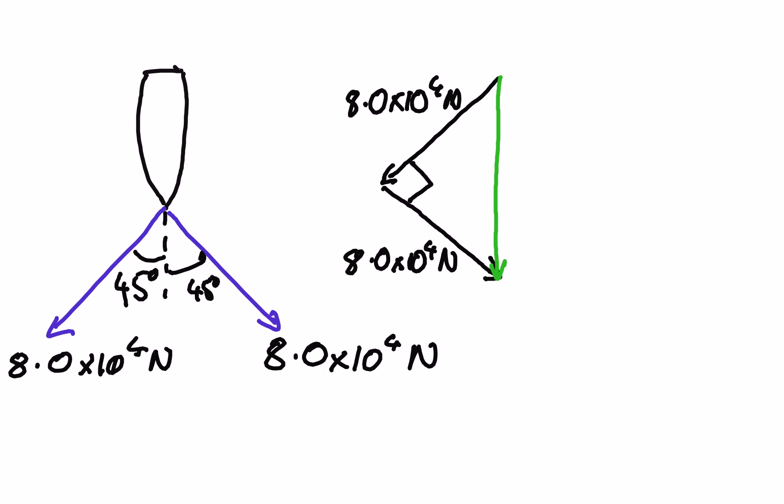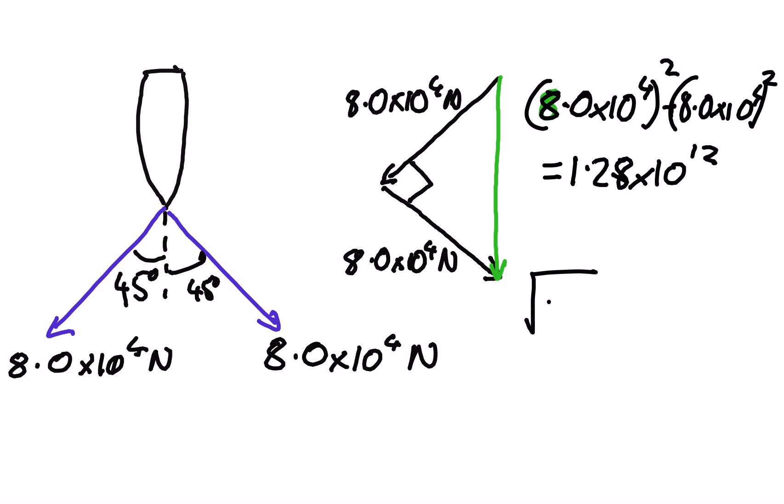We've got a right angle triangle. The resultant vector is the hypotenuse. So we've got 8.0 times 10 to the 4 squared plus 8.0 times 10 to the 4 squared, and that equals 1.28 times 10 to the 12. And of course this is the hypotenuse squared, so I need to take the square root of that. The square root of 1.28 times 10 to the 12 is 1.1317 times 10 to the power of 5 newtons.